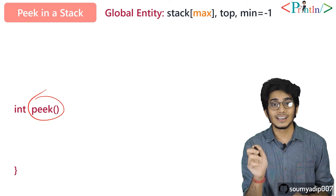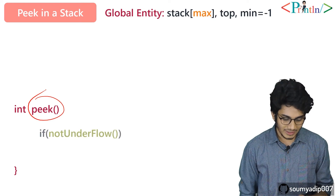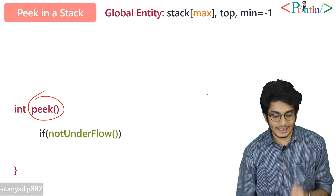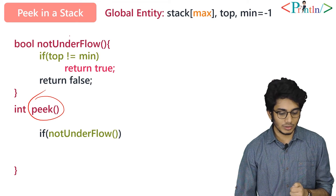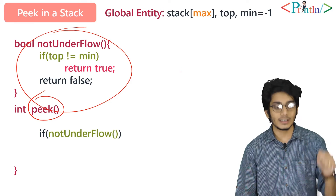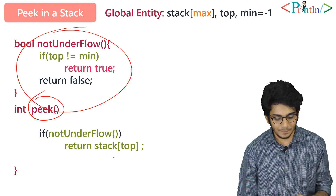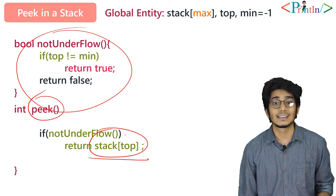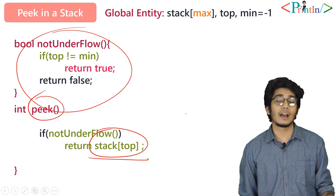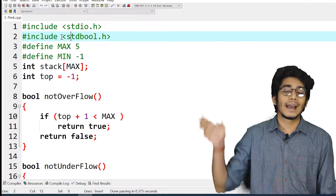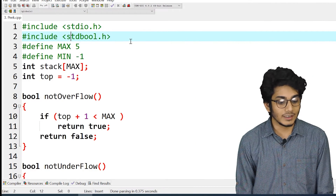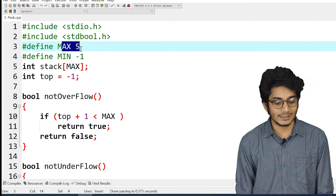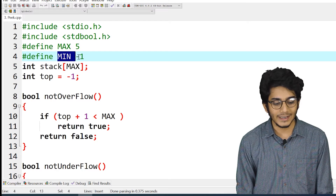Let's move into the code. At first, what we have to do is call the not-underflow function. This not-underflow function checks that our stack is in underflow or not. If the stack is not in underflow, we simply return the value at the top. We have declared two header files: one is stdio.h and another is stdbool.h. We have declared the size of the stack as 5 and min as minus 1.